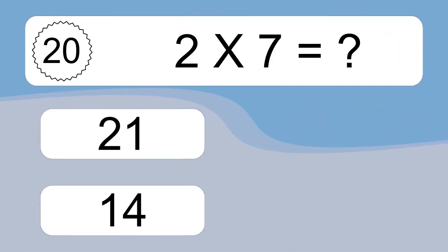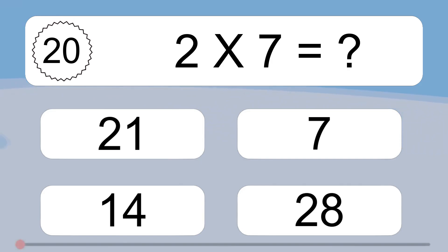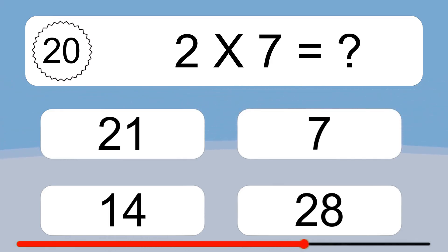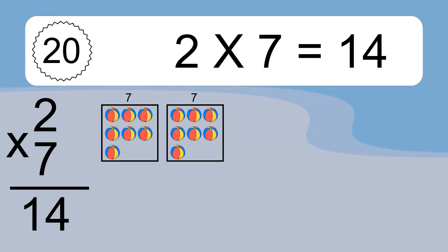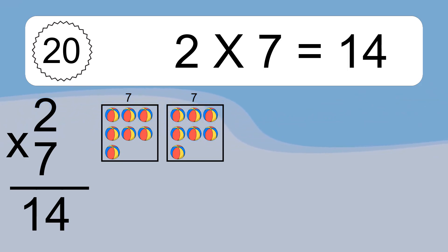2 times 7 equals what? 2 times 7 equals 14. We have 2 boxes, and each box has 7 colorful balls inside. If you count all the balls in all the boxes together, you will have 2 times 7 balls. This equals 14 balls.